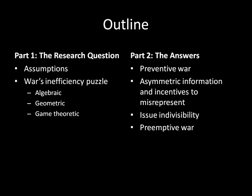To outline the rest of the unit: part one will deal with the research question, which we started here. In the next video we'll talk about the assumptions of the model, and then we'll get to the research question itself — war is an efficiency puzzle — which asks: if there are settlements we all prefer over war, why can't we reach them? We'll look at algebraic, geometric, and game-theoretic approaches. In the second half of the unit, we'll look at the answers: preventive war, asymmetric information and incentives to misrepresent, issue indivisibility, and preemptive war — which is different from preventive war, please never think those two are synonymous. In the next video, we'll start by looking at the assumptions of the model. Join me then.